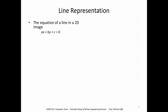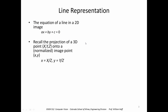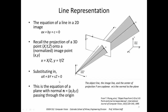Recall that the equation of a line in a 2D image is given by AX + BY + C = 0. Also recall that the projection of a 3D point XYZ onto a 2D image point is given by X/Z, Y/Z — in normalized image coordinates where we consider the focal length F to be equal to one. Substituting in for X and Y, we get A·X + B·Y + C·Z = 0, where the capital XYZ are the 3D coordinates of the point. This is the equation of a plane with normal (A, B, C), and that plane passes through the origin.